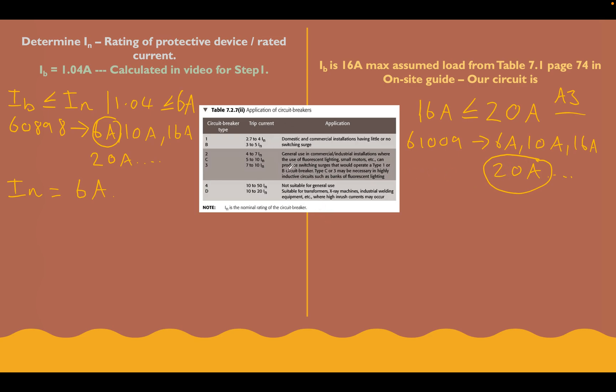Let's now look at these tables in the middle and keep this quite brief. Let's look at it and try and work it out. Circuit breaker type in this column, the trip current. So this is where these particular circuit breakers will trip, and then the application of them. Let's look at a type B here. We're saying it's for a domestic and commercial installation having little or no switching surge. Let's look at a C type here. General use in commercial industrial installations where the use of fluorescent light in small motors can produce switching surges that would operate a type 1 or B circuit breaker.